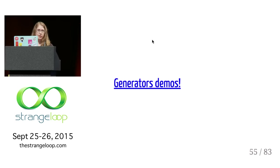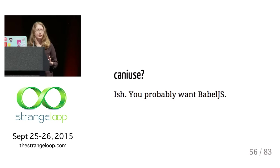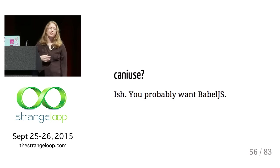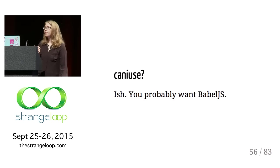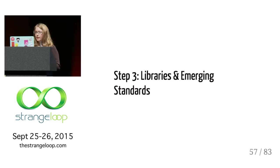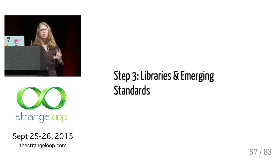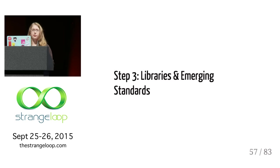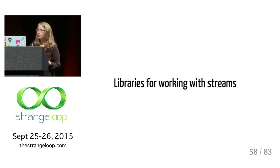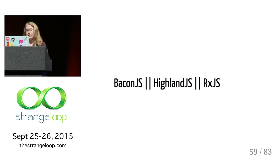That's the basics of JavaScript generators, AKA pull streams. Can you use them? I'm actually doing these demos in Chrome with no polyfills. But like everything in JavaScript, you probably need a polyfill if you have to support other browsers. Babel.js is the transpiler of choice in this space. So step three: libraries and emerging standards. We saw some push streams and pull streams in JavaScript that are current, and we also have some libraries and emerging standards that are really exciting.